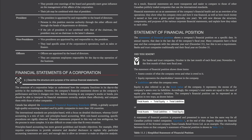Vice Presidents are appointed by and responsible to the president, and they lead specific areas of the corporation's operations, such as sales or finance. Officers are appointed by the board of directors and are corporate employees responsible for the day-to-day operation of the business.